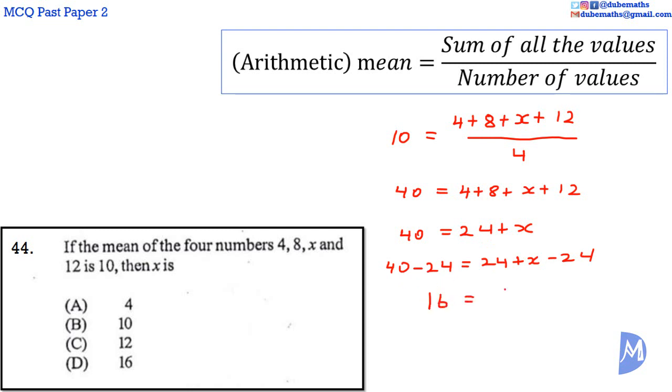40 subtract 24 is equal to 16. And then 24 subtract 24 is 0. So we are going to remain with only x. 16 is equal to x. X is equal to 16. The answer is D.